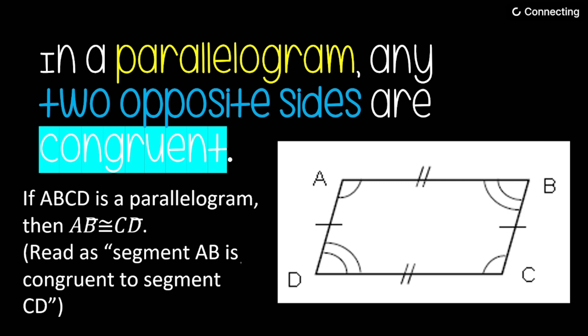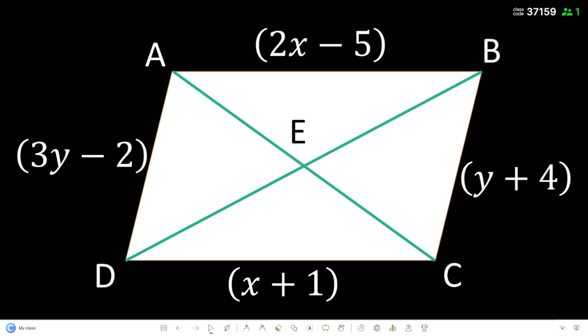And AD is also congruent to BC. Okay, and may given tayo dito na Parallelogram ABCD. And the measure of AB is 2x minus 5. The measure of line segment BC is y plus 4. And line segment CD is x plus 1. And line segment AD is 3y minus 2.